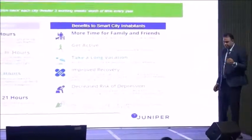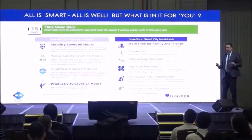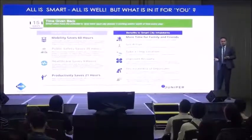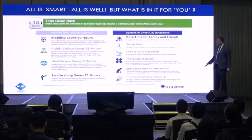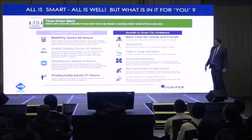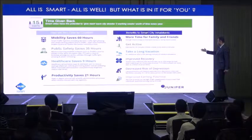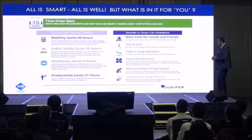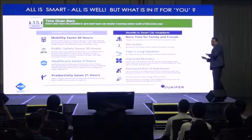Everything is done — we have a smart city. But what's in it for you? What's in it for the common man? Juniper has done that study for us. Smart cities give the potential to give back three working weeks' worth of time for every individual: mobility saves 60 hours, public safety saves 35 hours, healthcare saves 9 hours, and productivity saves 21 hours. These can be utilized for more time with family, getting active, taking a long vacation, improved recovery, decreased risk of depression, and improved earning potential. Every city in the world must adapt to be a smart city so the average person gets back this time.